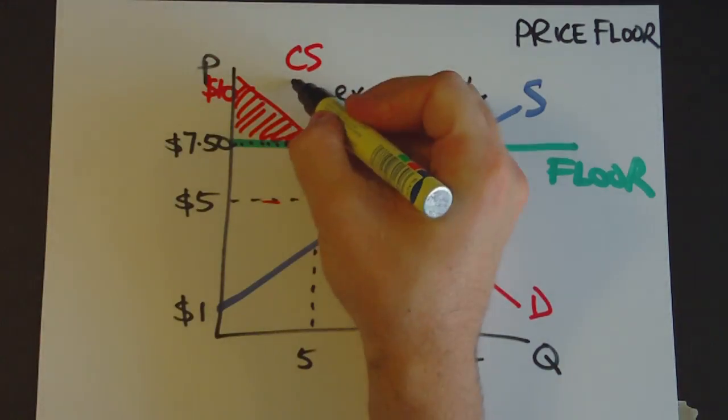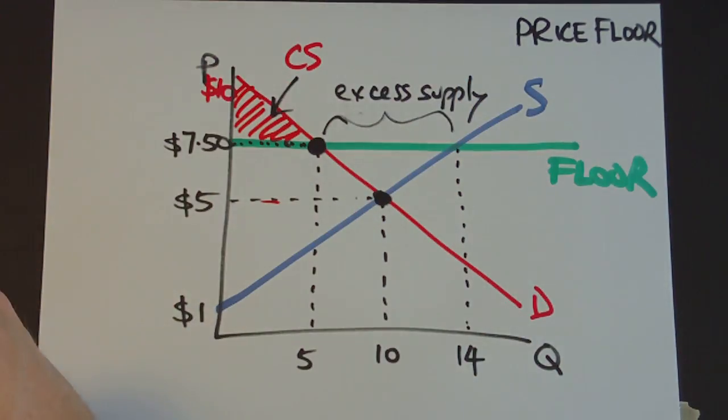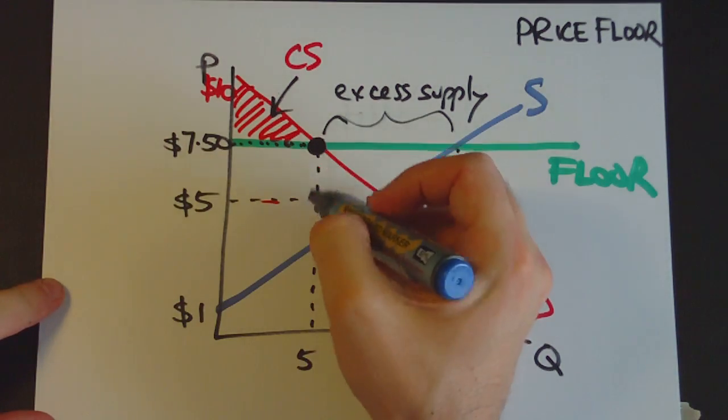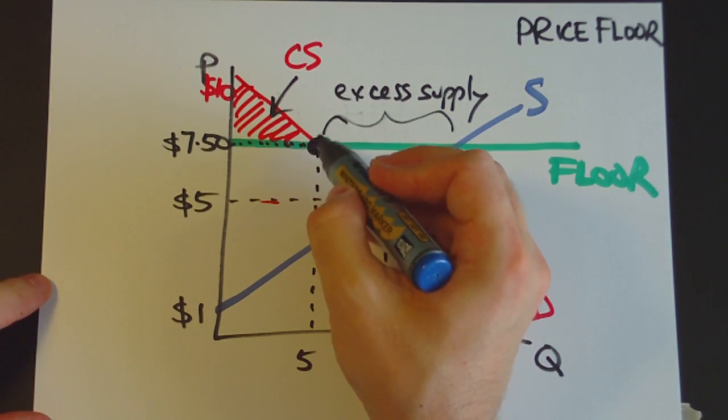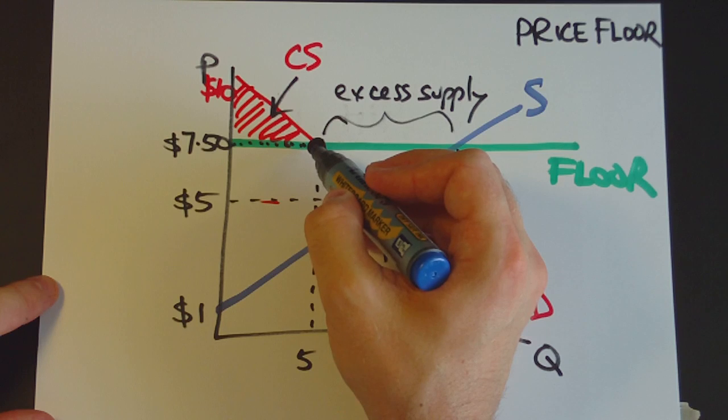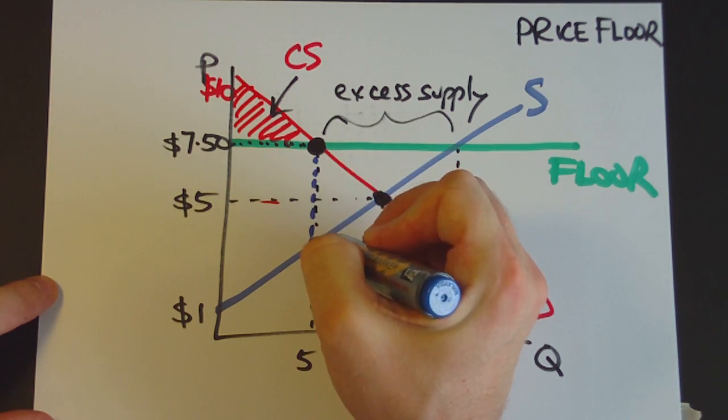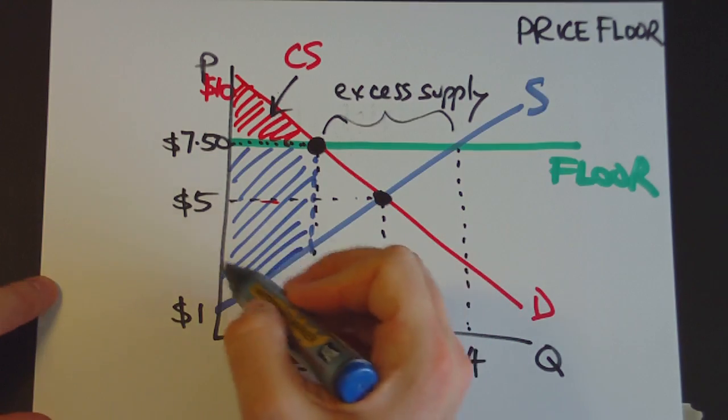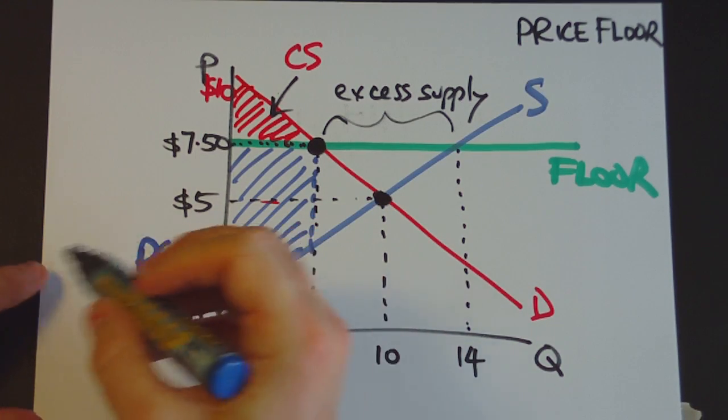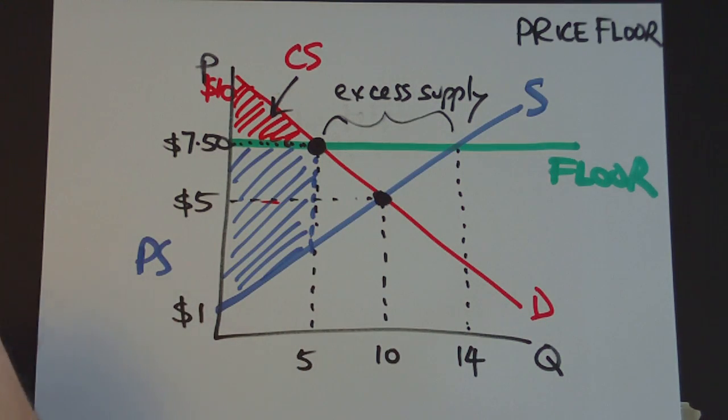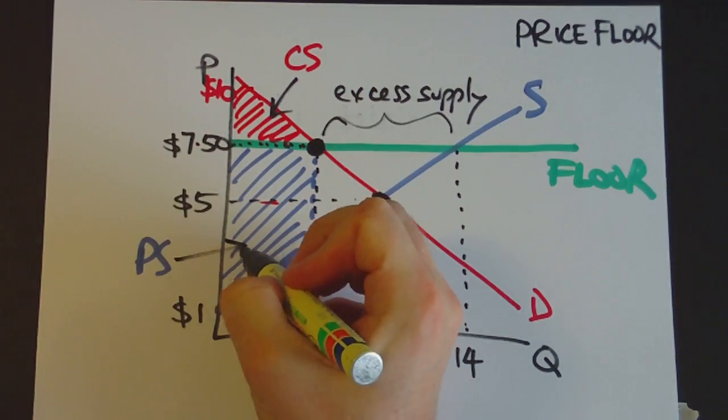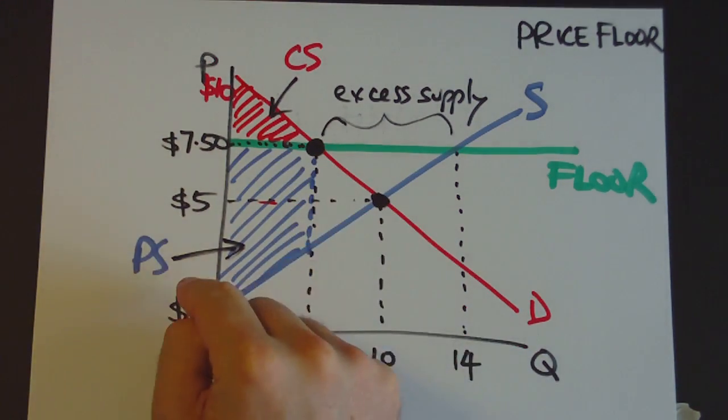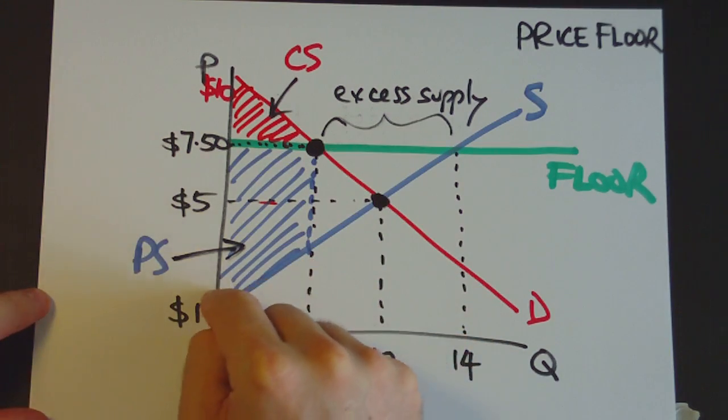and consumer surplus is everything between the demand curve and that horizontal line that you drew. So that's consumer surplus. And this area here. And that's much smaller. That's obviously shrunk down significantly. What's happened to producer surplus? Well, the way to work out producer surplus is you identify the point that the market's going to operate at,